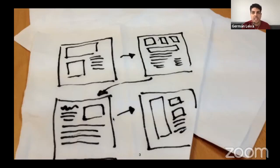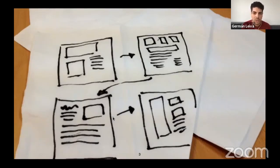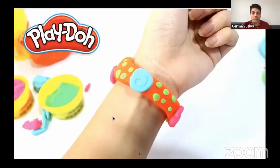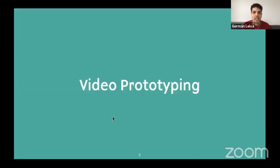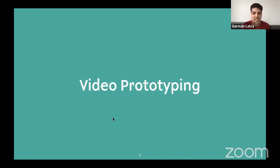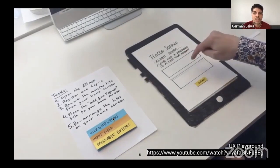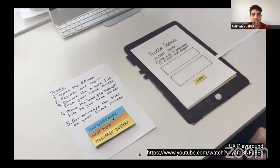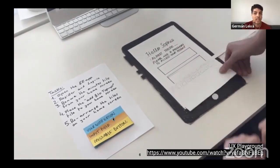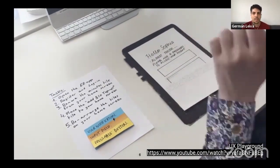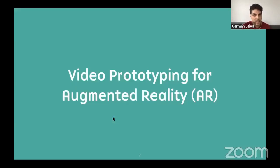From static sketches on a napkin to quickly visualize the user flow, to physical prototyping with clay to explore the form of a design. However, some designers rely on video to prototype dynamic system responses. They combine paper prototyping with the Wizard of Oz technique to let them play the role of the computer. But how can a technique like video prototyping be used specifically for augmented reality?